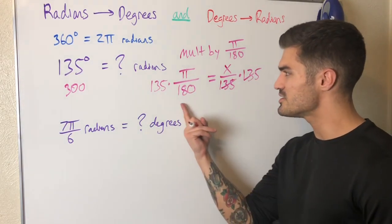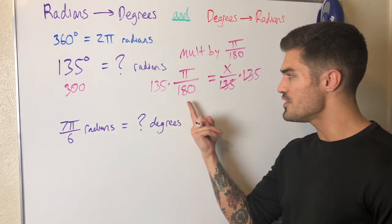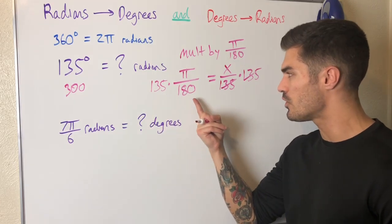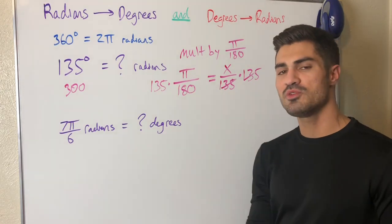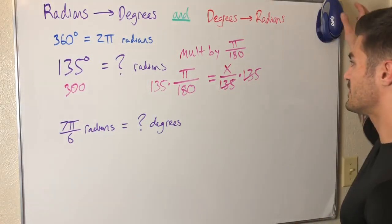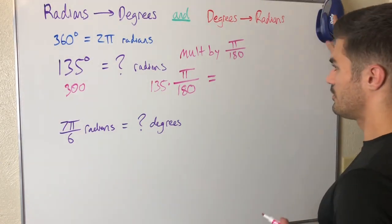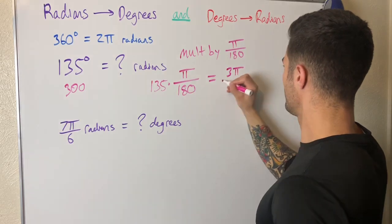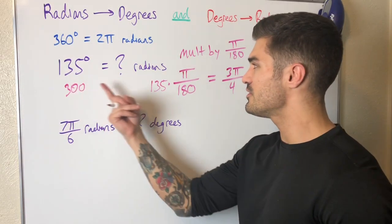To get from degrees to radians, multiply by π over 180. I can go and evaluate this. Let's see, I know I see the fives in common. 45 times 3 is 135 and 45 times 4 is 180, so this is going to simplify to 3π over 4. This equals 3π over 4, and this is 135 degrees in radians, which is 3π over 4 radians.